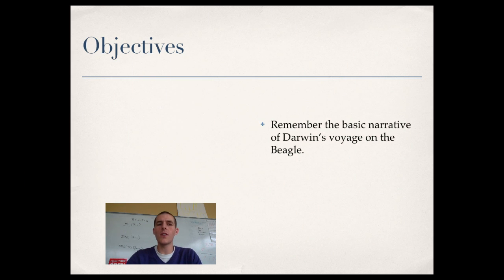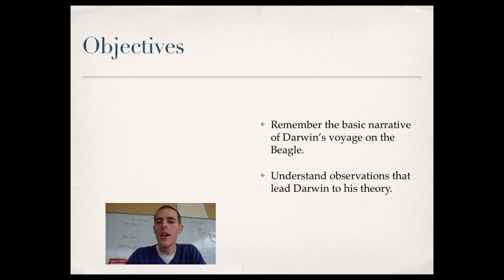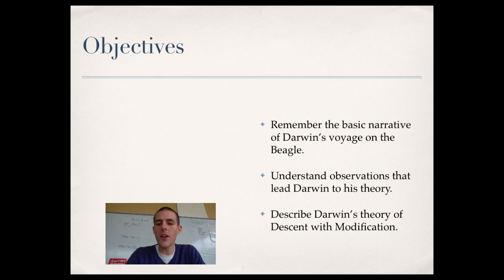By the end of this video, there are three things I want you to be able to know, do, or talk about. First, remember the basic narrative of Darwin's voyage on the Beagle — why was he there, what was the mission about? Second, understand the observations that led Darwin to his theory. And finally, describe Darwin's theory of descent with modification.